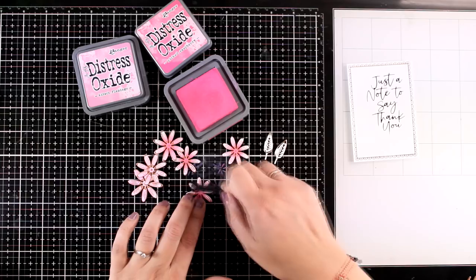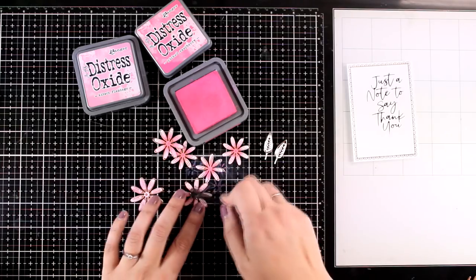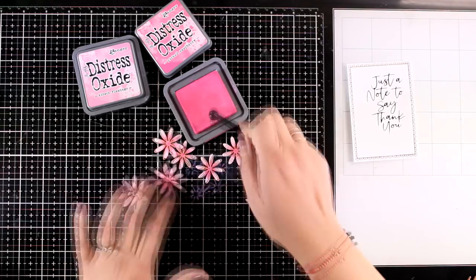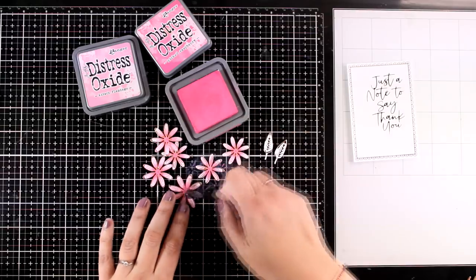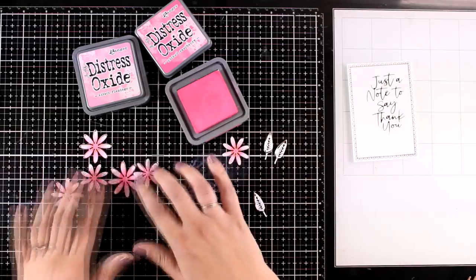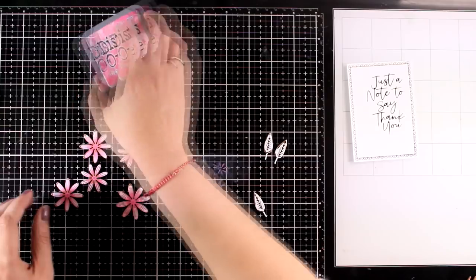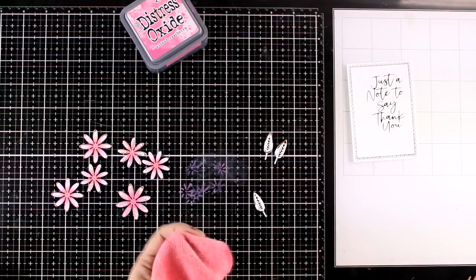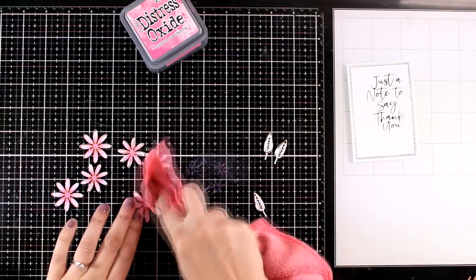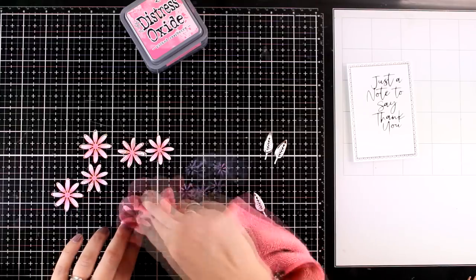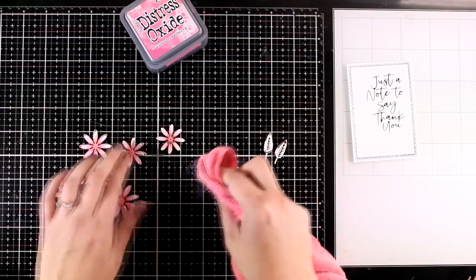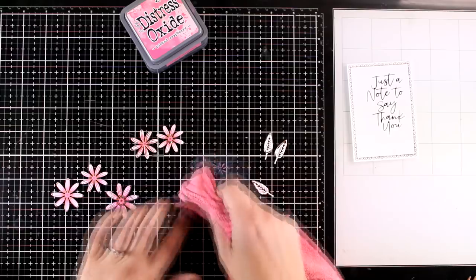When you apply Distress Oxide on top of those die cut and foiled pieces you will see that Distress Oxide is going to stay on top of the foiling. It's going to make it dull and cover it up. However, fear not, the foiling kind of resists the ink so with a clean cloth I will go over and wipe them out and you will get all that shine from the foiling back.